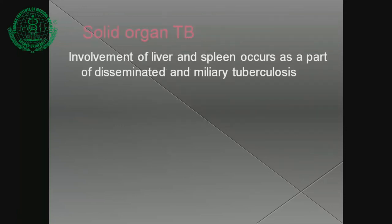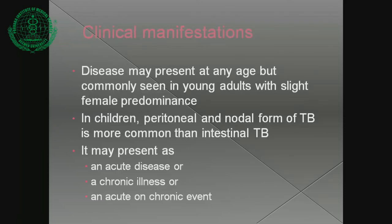Solid organ tuberculosis: involvement of the liver and spleen occurs as part of disseminated and miliary tuberculosis. Clinical manifestations: abdominal tuberculosis may present at any age but is commonly seen in young adults with a slight female predominance. In children, peritoneal and nodal forms of tuberculosis are more common than intestinal tuberculosis. It may present as acute disease, chronic illness, or an acute-on-chronic event.